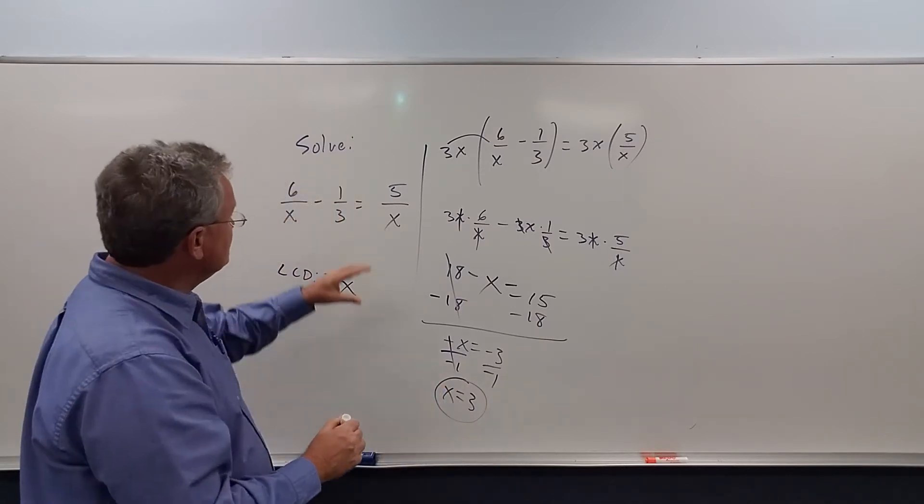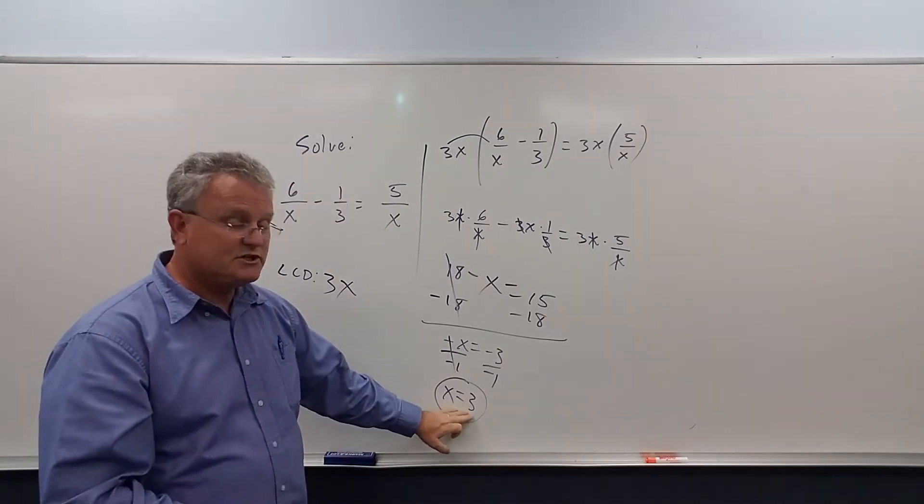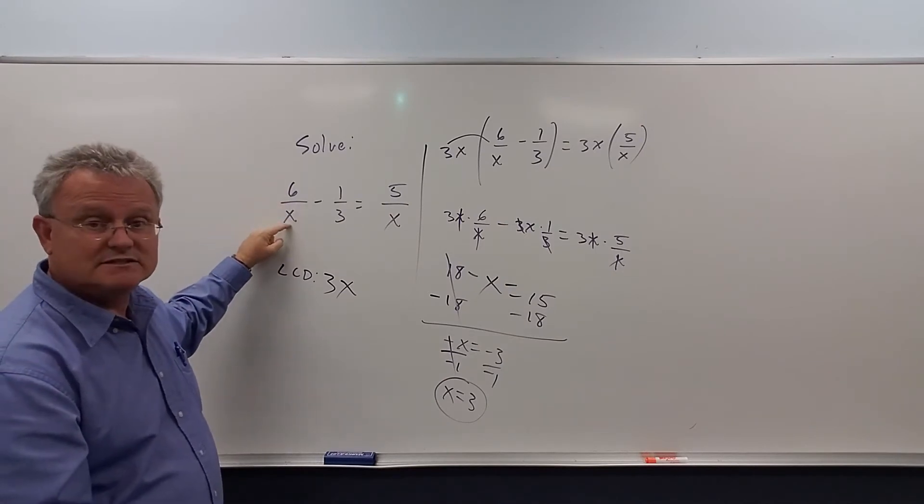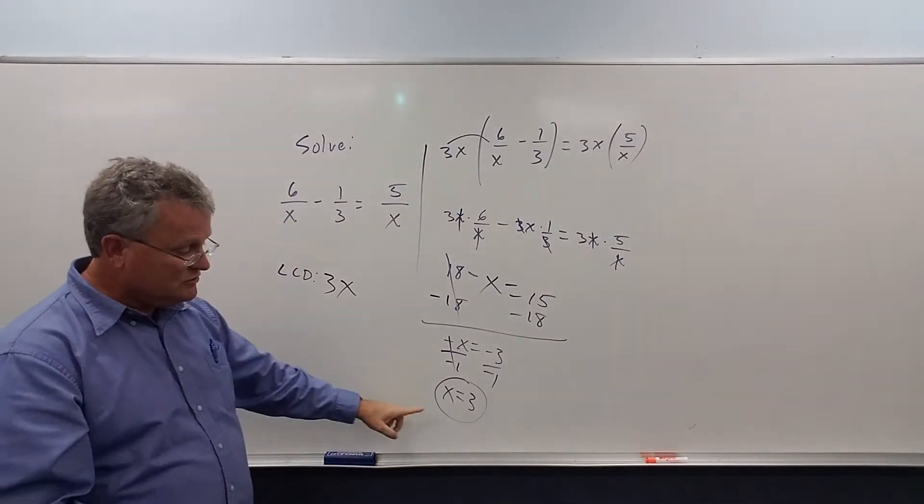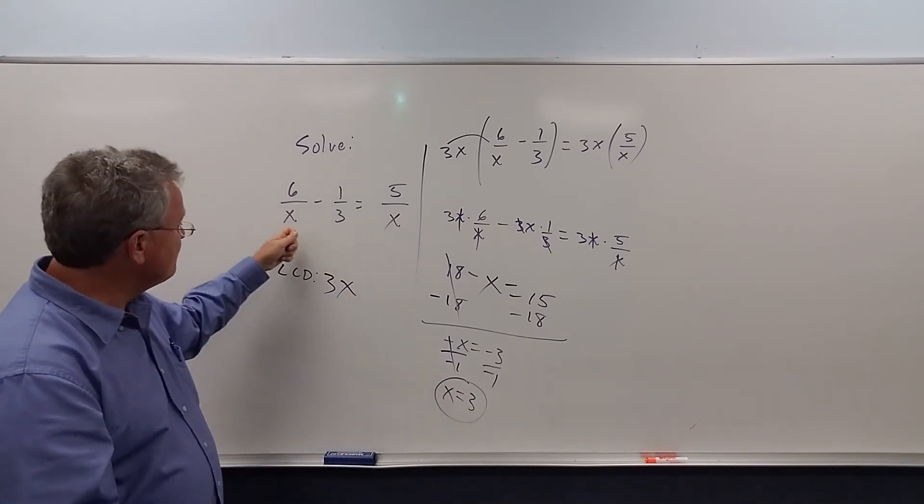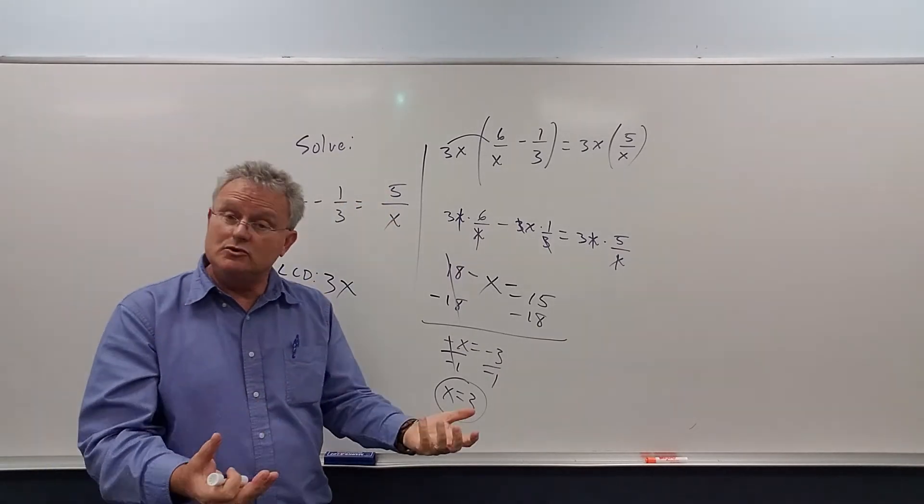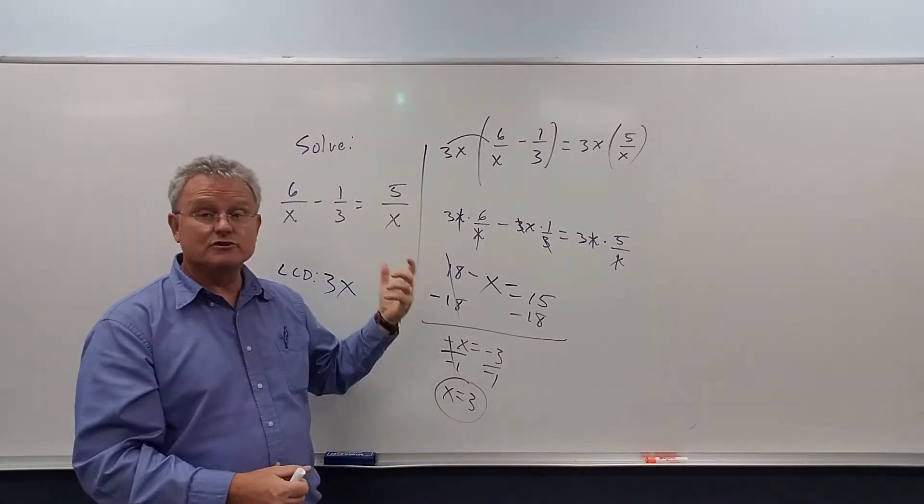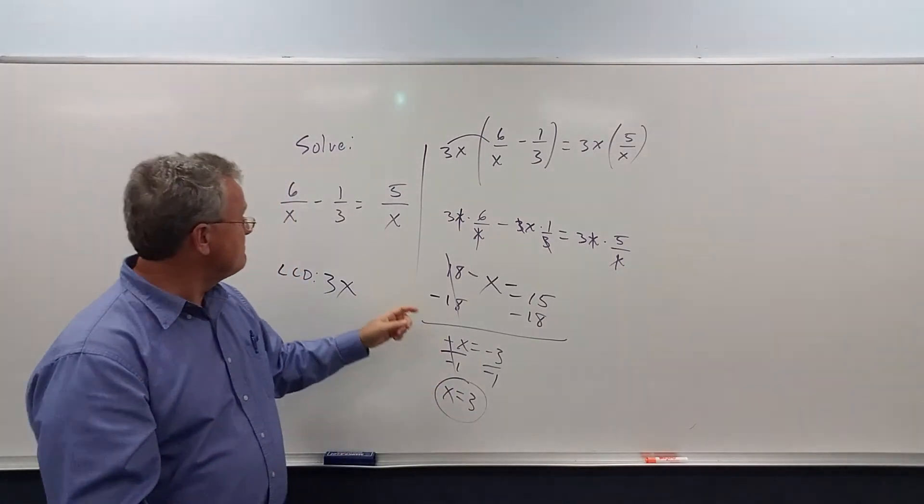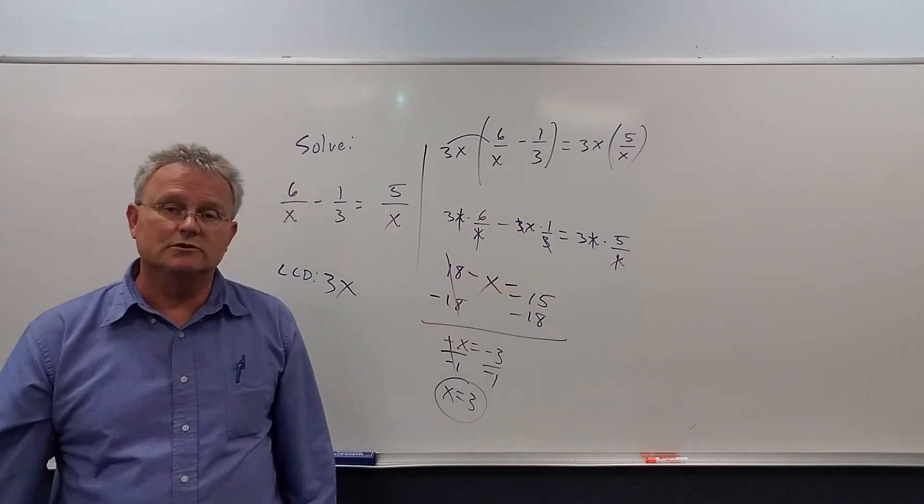Now with rational equations, with these types of equations, when you get your answer, you need to plug it in and make sure you don't get division by 0. Because if you do, then it turns out that that's not an actual solution. When I plug in 3, 6 over 3 and 5 over 3, we do not get a number over 0. So this is the solution. You can double check by plugging in 3 and then adding both sides and showing they're equal to each other.